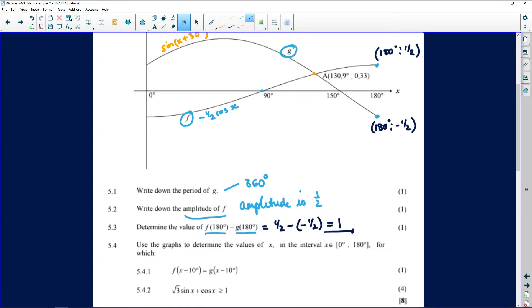The value of f of 180 minus g of 180 is indeed one. Now here the interesting stuff starts. They say f of x minus 10 is equal to g of x minus 10. So what happened is there's my graphs. Both of those graphs moved. How did they move? Well it's minus 10, so I moved them 10 degrees to the right.